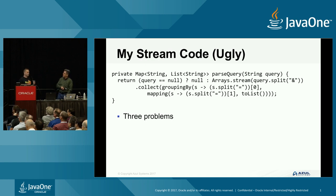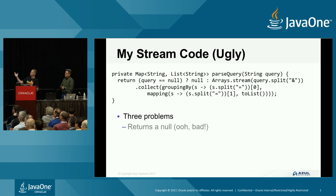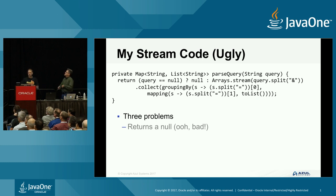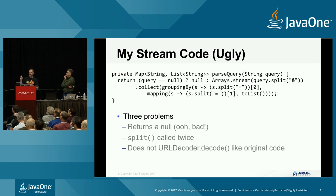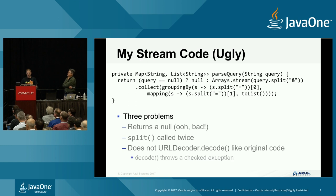There are three problems with this. I came up with two problems and then Stuart pointed out a third. The three problems are: first, this can return a null - never a good idea, especially since we have Optional in JDK8. Second, split is called twice - we're doing the same thing twice, which is very inefficient. And third, it doesn't call the URLDecoder.decode method used in the original code - because decode throws a checked exception, and if you're using the stream API, you can't throw an exception out of a stream method.